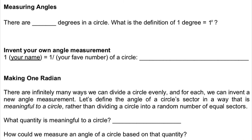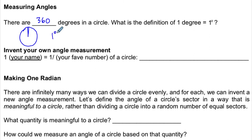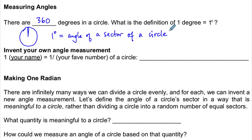So what does this have to do with circles, and why did we spend time converting? We want to talk about more meaningful ways to measure an angle. We're very familiar with degrees, and we know there are 360 degrees in a circle. By the definition of a degree, we take a circle and chop it into 360 equal pieces — each piece like a pizza slice, called a sector. So 1 degree equals the angle of a sector of a circle that has been divided evenly into 360 pieces.